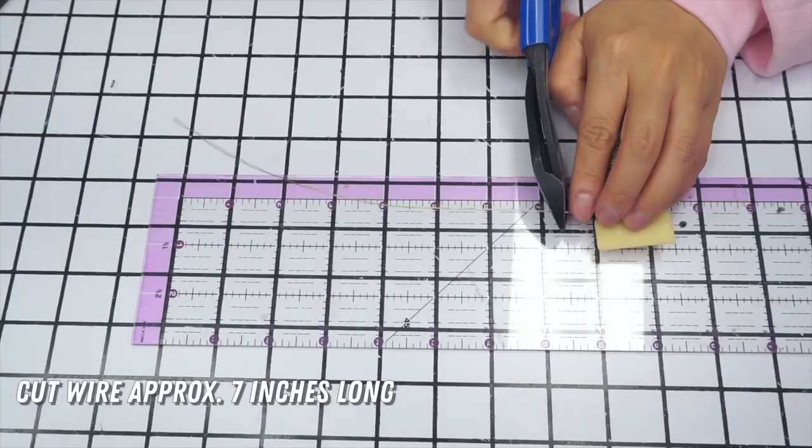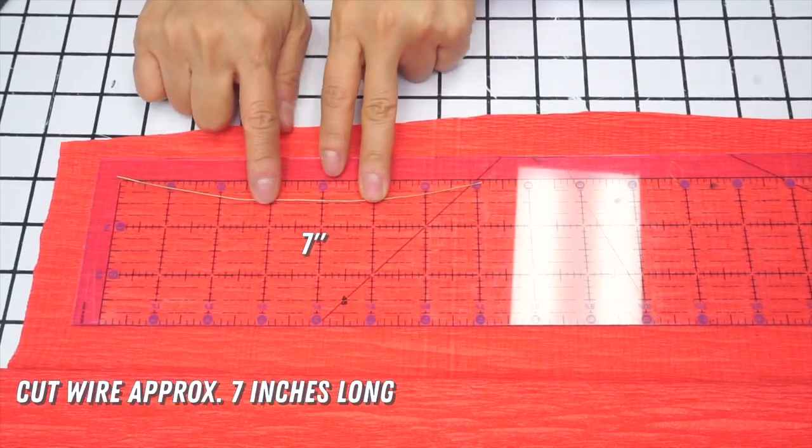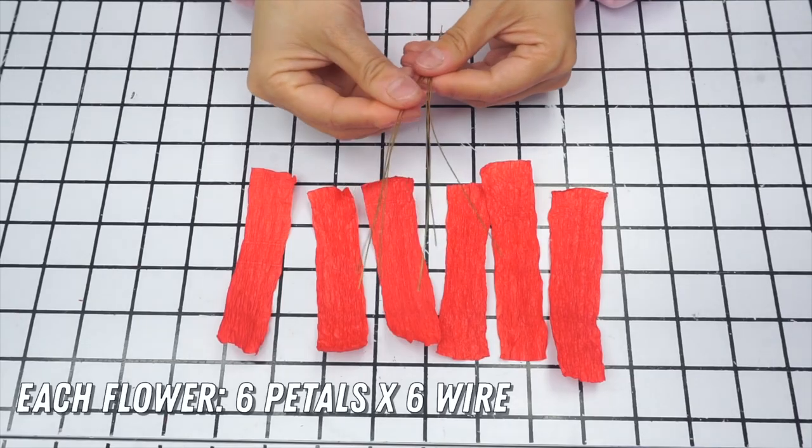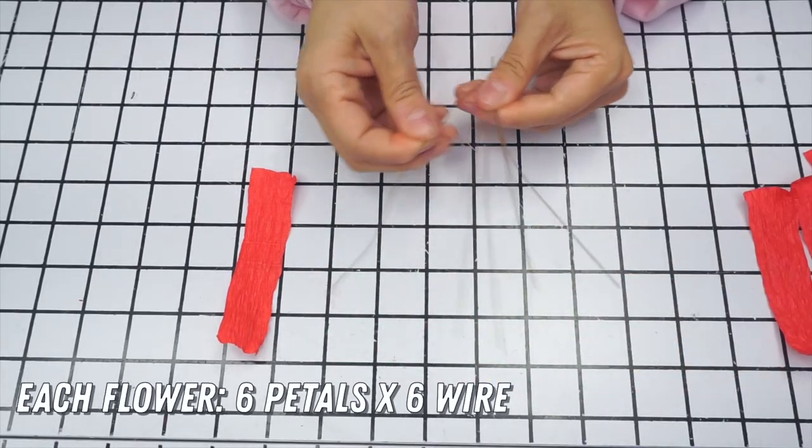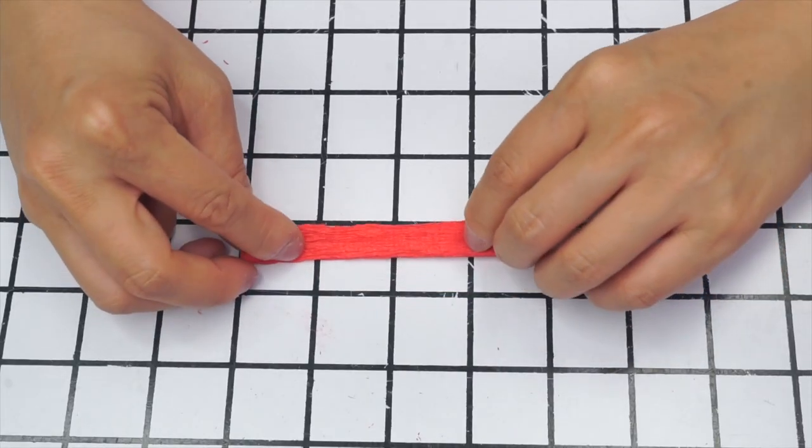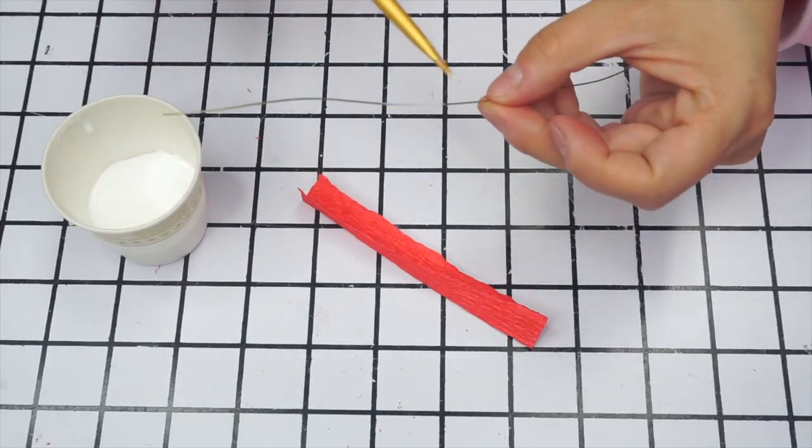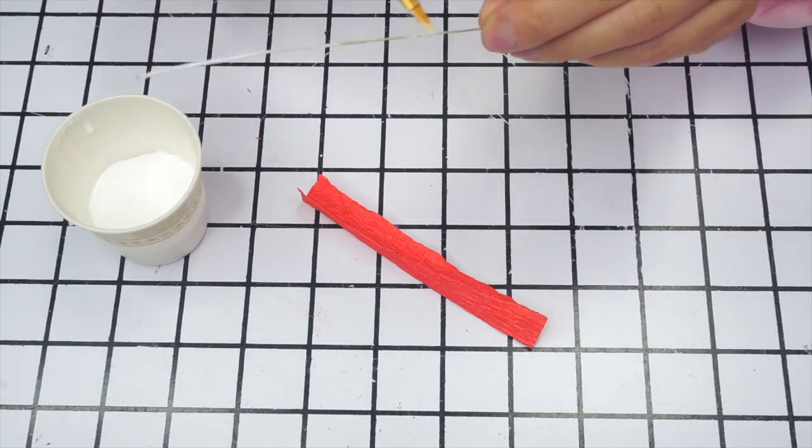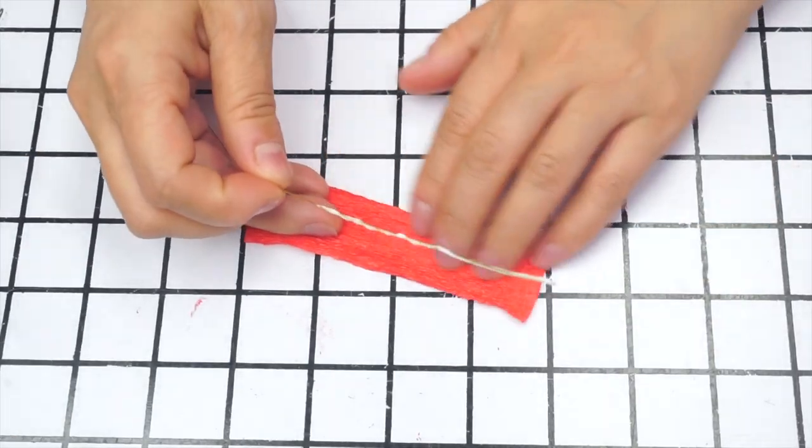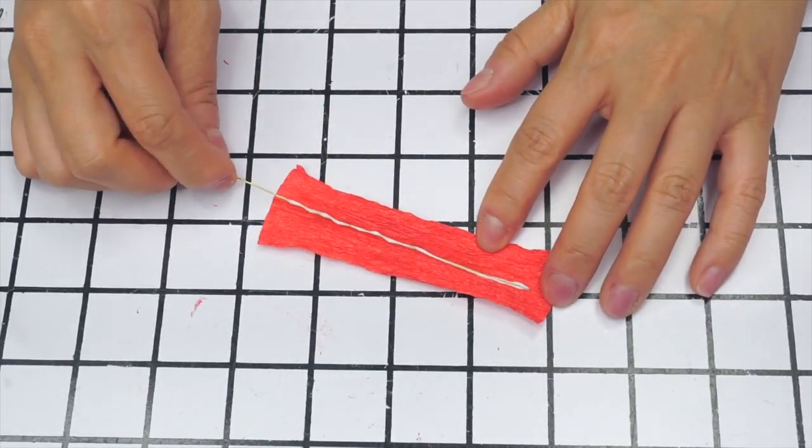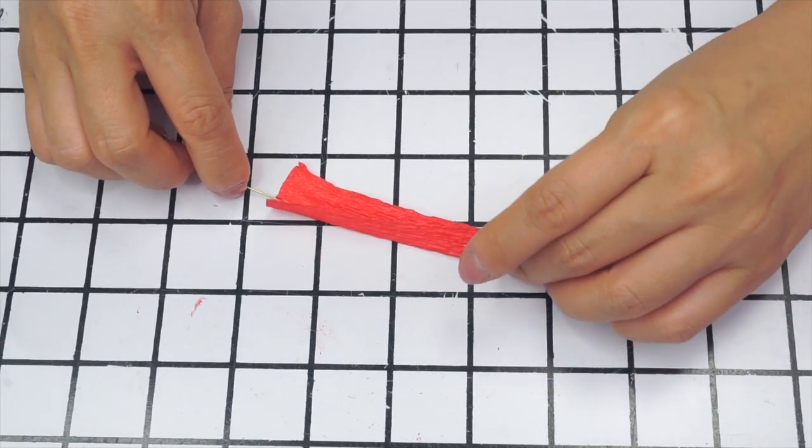Next, unroll your thin floral wire and cut a seven inch length. For each flower you need six pieces of paper and six wires. Fold the paper in half lengthwise to mark the center line. With a small brush, evenly coat the wire in Elmer's glue. Place the wire on the paper along the center line and fold the paper over it.